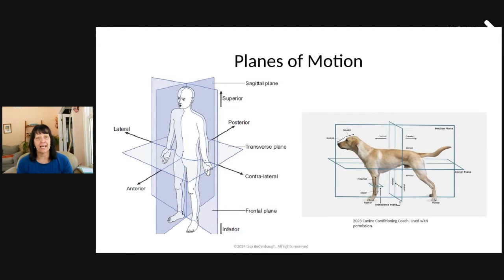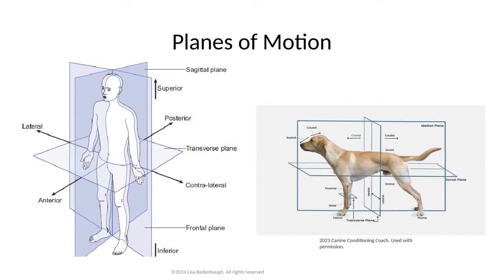When we talk about up and down, superior is up towards our head and inferior is towards our feet. In dogs, towards their head is called cranial and towards their tail is called caudal. The transverse planes are the same — splitting the front half from the back half in both humans and dogs. And the sagittal plane, splitting right to left, they call the median plane.